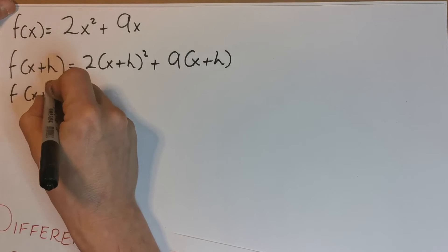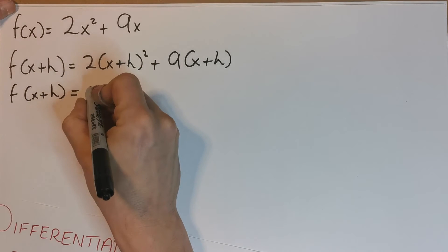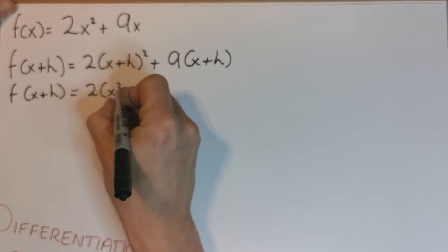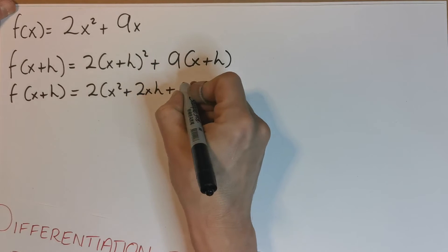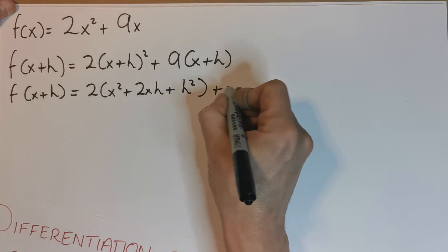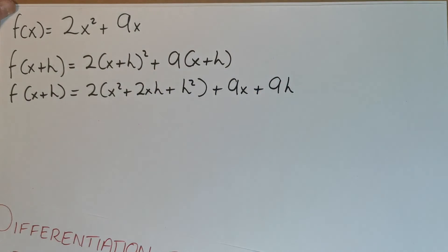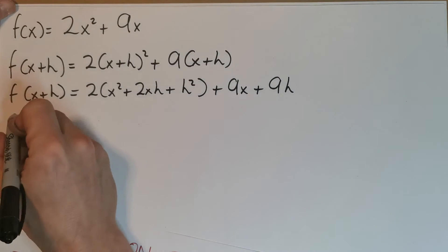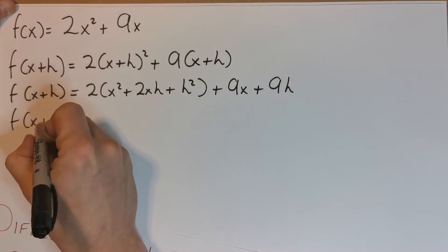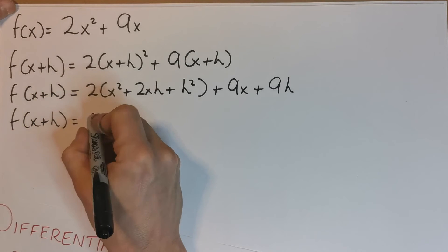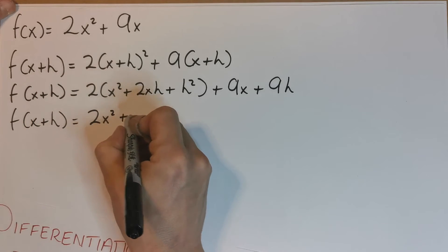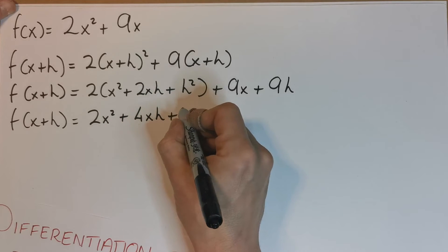Okay, so let's keep going here. f(x+h) equals 2x² + 4xh + 2h² + 9x + 9h.